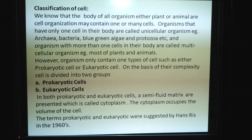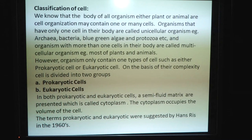Classification of cell. The body of all organisms, either plant or animal, may contain one or more cells. Organisms that have only one cell in their body are called unicellular organisms. For example, archaea, bacteria, blue-green algae and protozoa. Organisms with more than one cell in their body are called multicellular organisms. For example, most plants and animals.